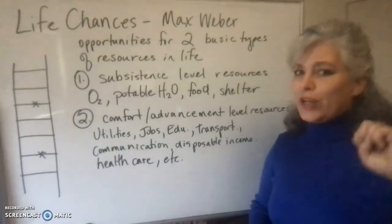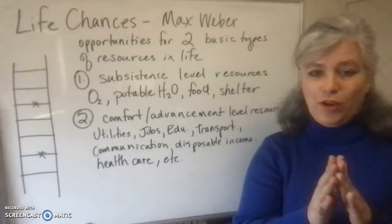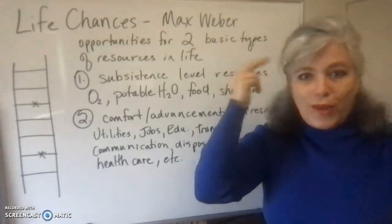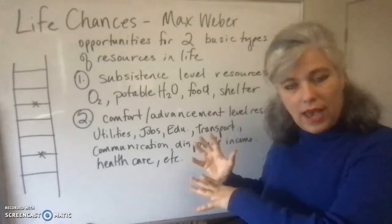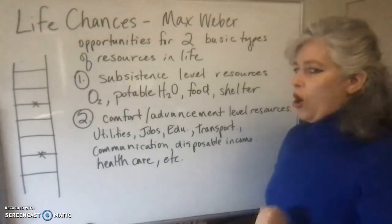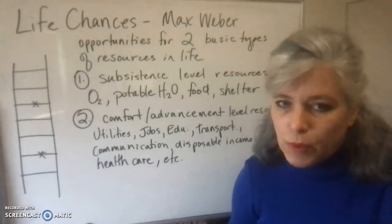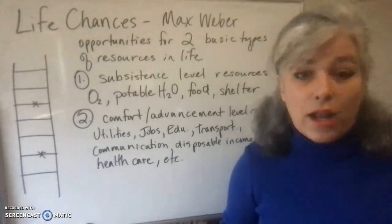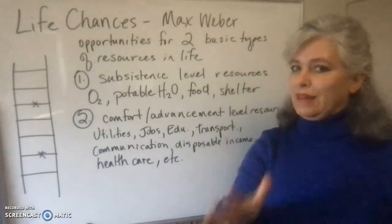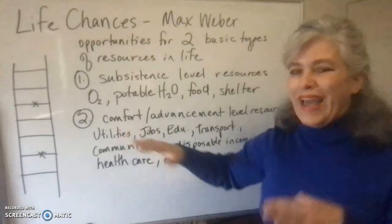I have a two-part explanation of life chances on the board here. When you look in our textbook, the author has a correct definition, but it is not as detailed as this one. I have broken it down specifically so that you can see how to apply this concept to different situations and scenarios I'm going to present later in the semester. Life chances are opportunities that exist in life for two different types of basic resources: the first is subsistence level things, and the second is comfort and advancement level things.